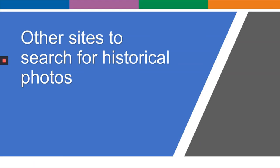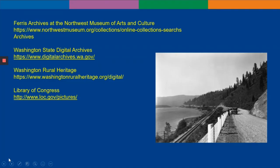If you've searched our site and didn't find photos of what you're looking for, here are some other places to find photos. I'm not going to do a full search for each one, just to get you started. The best place for photos of Spokane is the Ferris Archives at the Northwest Museum of Arts and Culture, or the MAC — they have the biggest collection of photos of the region. The Washington State Digital Archives has a nice collection, but their photos are government-related, such as a collection of the Spokane Parks. Washington Rural Heritage has a collection of photos from small towns around Washington. The Library of Congress, which you might not think of, has a collection of photos from all over, and you can search using Spokane.